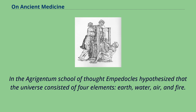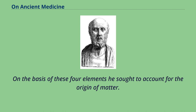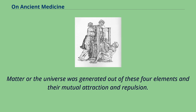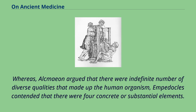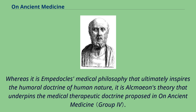In the Agrigentum school of thought, Empedocles hypothesized that the universe consisted of four elements — earth, water, air, and fire — and sought to account for the origin of matter through their mutual attraction and repulsion. Whereas Alcmaeon argued there were an indefinite number of diverse qualities making up the human organism, Empedocles contended there were four concrete or substantial elements. It is Empedocles' medical philosophy that ultimately inspires the humoral doctrine of human nature, while Alcmaeon's theory underpins the medical therapeutic doctrine proposed in On Ancient Medicine.